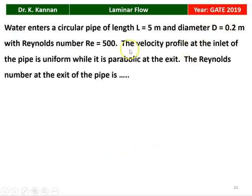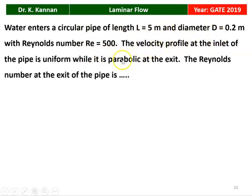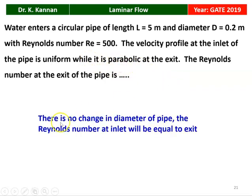The next question is from the GATE 2019 question paper. Water enters a circular pipe of length L = 5 m and diameter D = 0.2 m with Reynolds number equal to 500. The velocity profile at the inlet is uniform while it is parabolic at the exit. The Reynolds number at the exit of the pipe is? Since the velocity profile is parabolic at the exit, the flow is laminar. For laminar flow, there is no change in Reynolds number or pipe diameter, so the Reynolds number at the exit is also equal to 500.